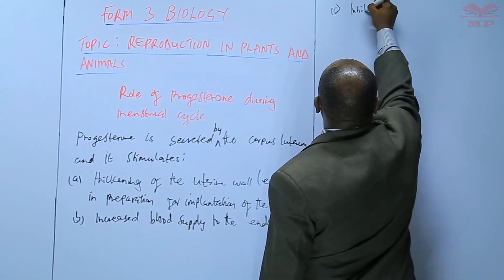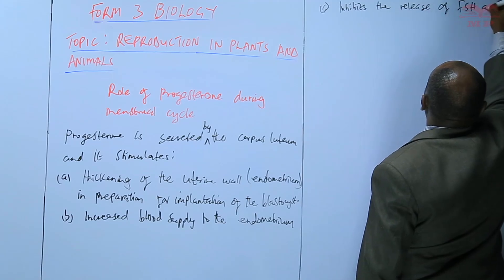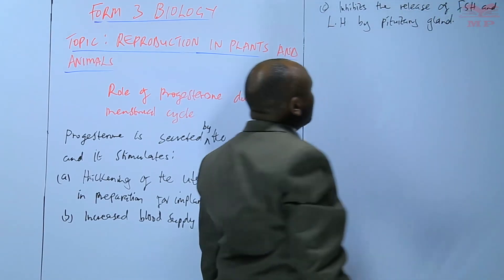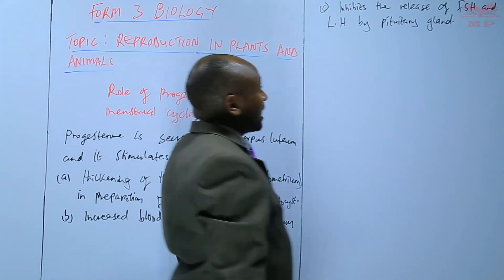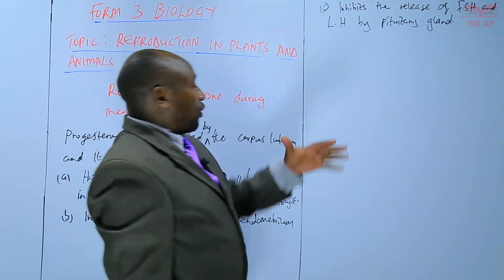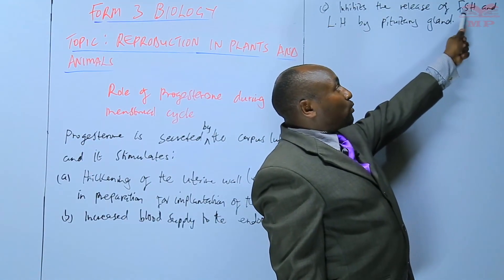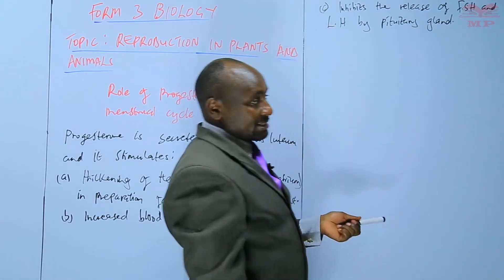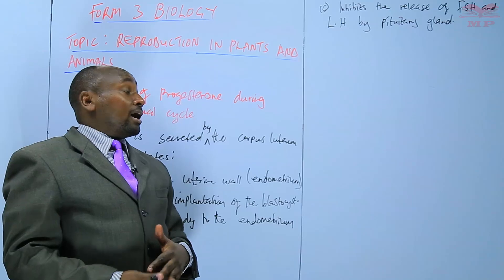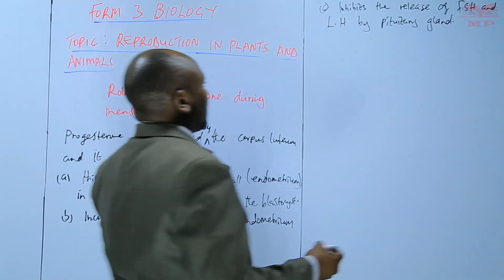Progesterone also inhibits the release of follicle stimulating hormone and luteinizing hormone by the pituitary gland. It inhibits the pituitary gland from releasing follicle stimulating hormone and luteinizing hormone. The reason for that is because if progesterone levels remain high and the wall remains thickened, that means there is pregnancy, and therefore we do not need another follicle to develop and we do not need another ovulation to take place. High levels of progesterone indicate that pregnancy is present, and therefore follicle stimulating hormone and luteinizing hormone should not be produced.